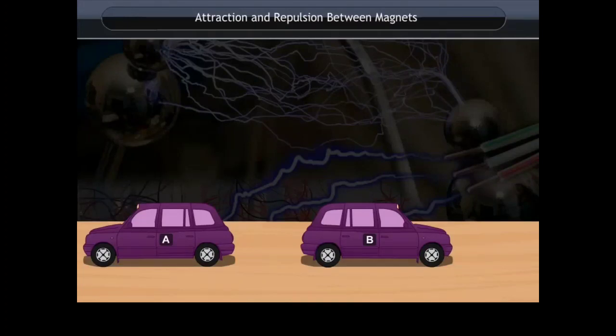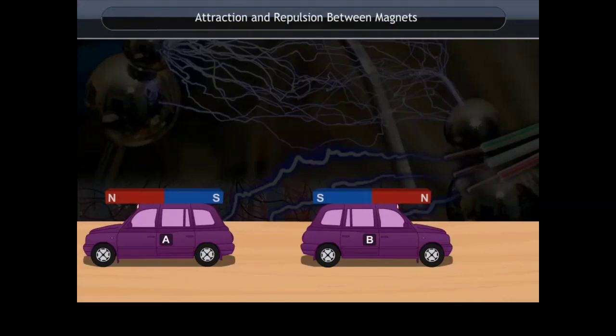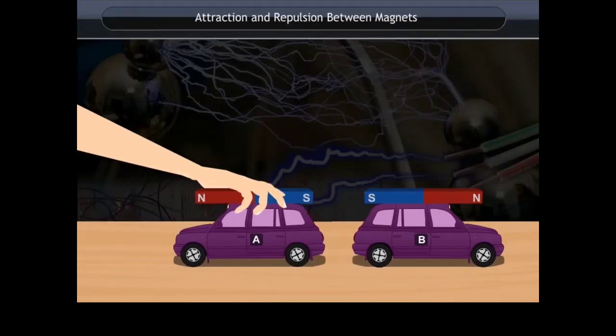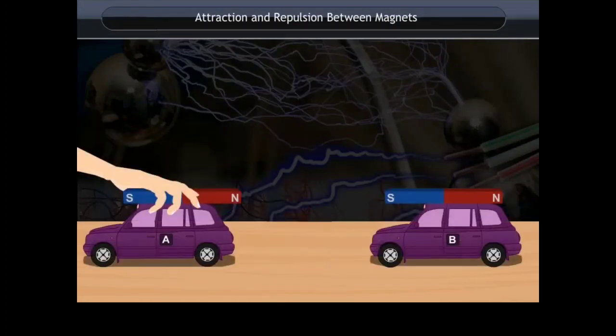Attraction and repulsion between magnets: Now place the two bar magnets on toy cars such that the south pole of car A is followed by the south pole of car B, or north pole of car A is followed by north pole of car B. Now bring car A near to car B. You will find that car B moves away from car A. This is called repulsion. Now place the two bar magnets on the cars such that north pole of car A is followed by the south pole of car B or vice versa.